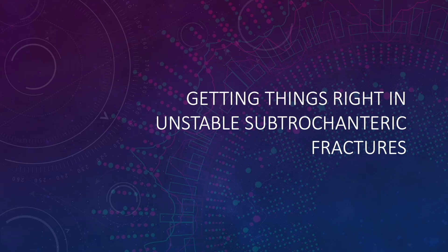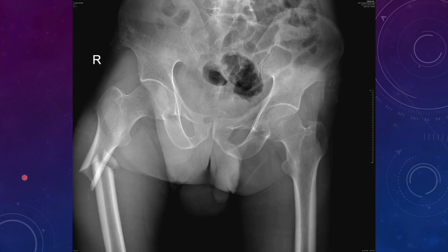Hello friends. In this video, I will be talking about unstable subtrochanteric fractures. We all must have encountered subtrochanteric fractures at some stage of our experience. The problem in subtrochanteric fractures is not the reduction — it is actually to maintain the reduction throughout the process of intramedullary nailing for these fractures.